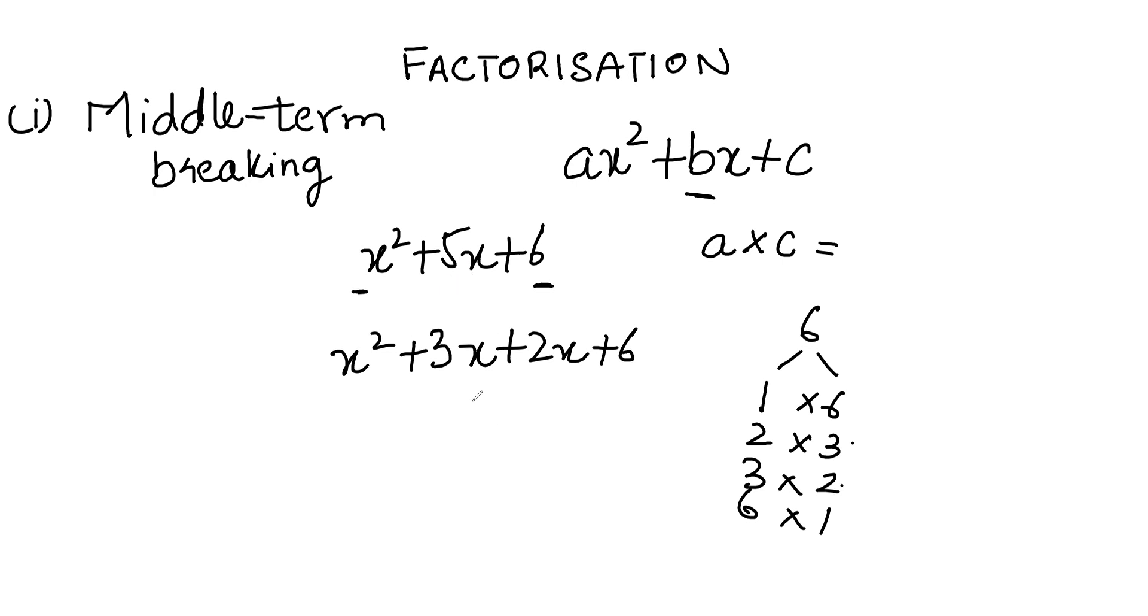Now you take out the common factors: x(x + 3) + 2(x + 3). There's a rule in middle term breaking: you have to always look at this step to ensure the expressions in the brackets match. These two expressions should always match.